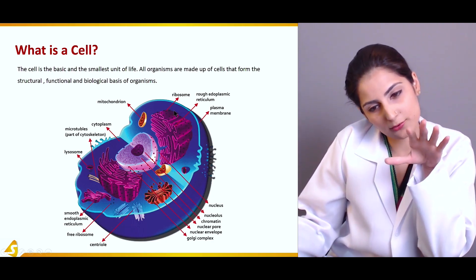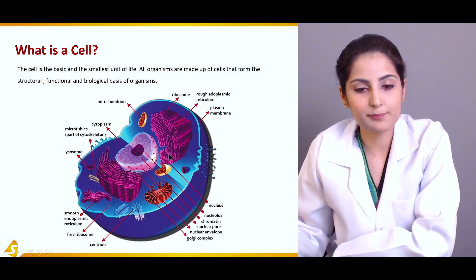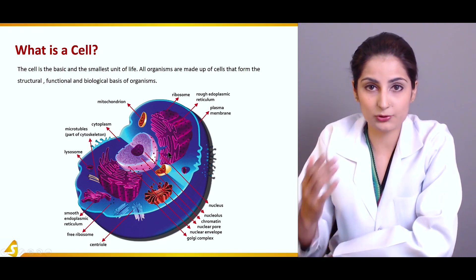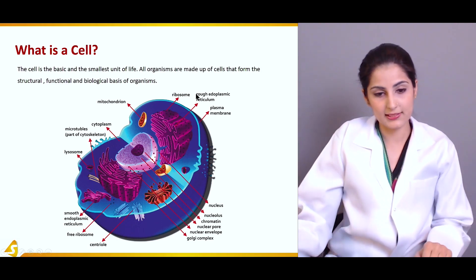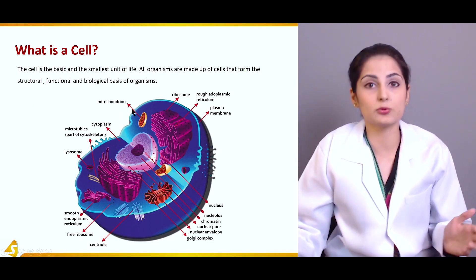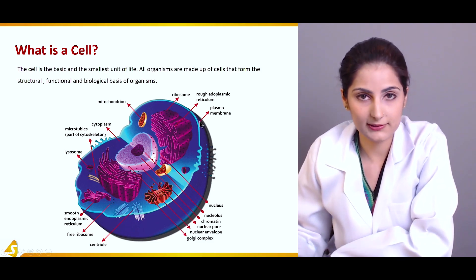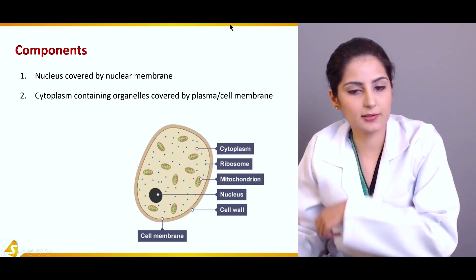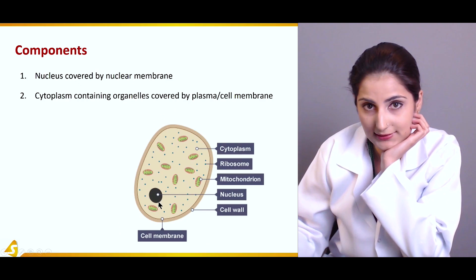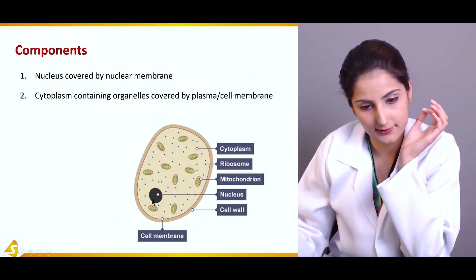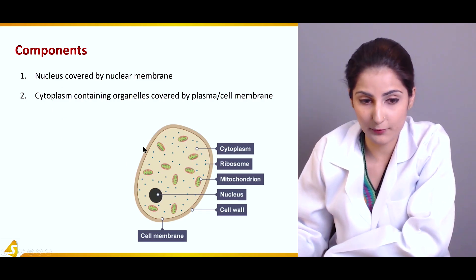Now what does this cell membrane do? It keeps the contents of the cell inside and it protects the cell contents from the outside environment. Other organelles have their own functions — mitochondria is the powerhouse of the cell, nucleus is the brain of the cell — but today we are going to concentrate more on the cell membrane. The components can be broadly classified as the nucleus, which is covered by a nuclear membrane, and the cytoplasm that is covered by the cell membrane.